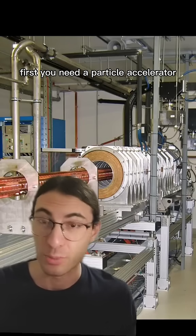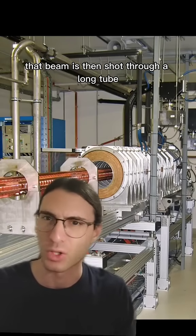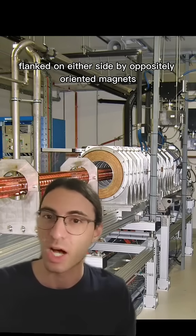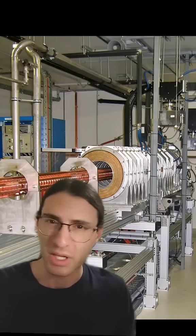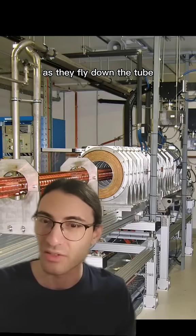First, you need a particle accelerator to produce a beam of electrons going near the speed of light. That beam is then shot through a long tube flanked on either side by oppositely oriented magnets. Because electrons are charged, these magnets cause them to wiggle up and down as they fly down the tube.